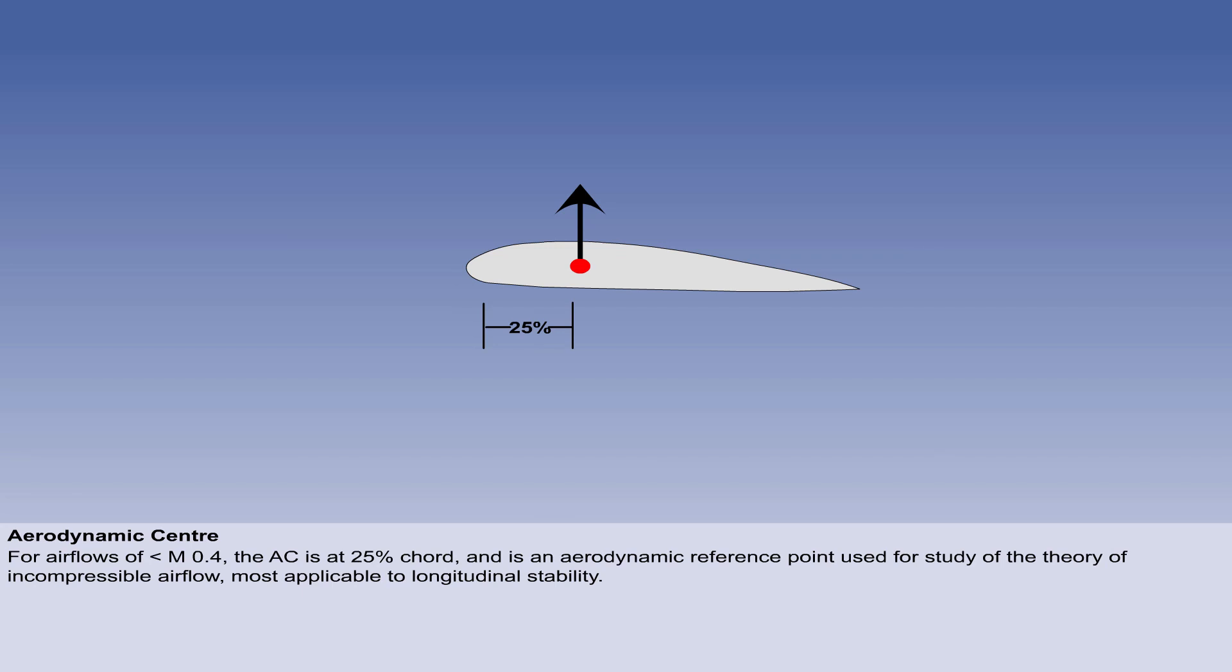For subsonic air flows of less than Mach 0.4, the AC is located at the 25% chord point, regardless of camber, thickness, or angle of attack. The AC is an aerodynamic reference point which is used for examination of the theory of incompressible airflow, and is most directly applicable to longitudinal stability, as you will see later in the syllabus.